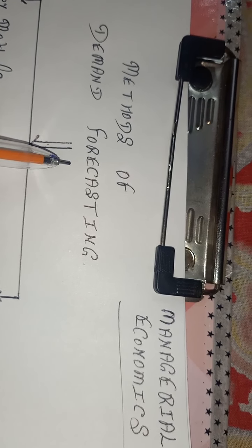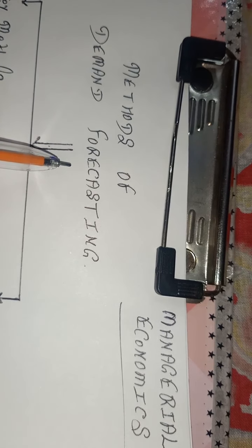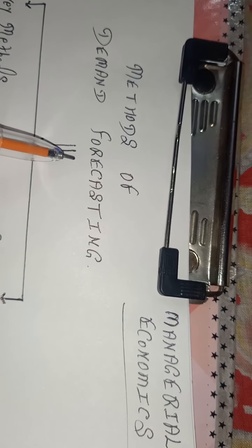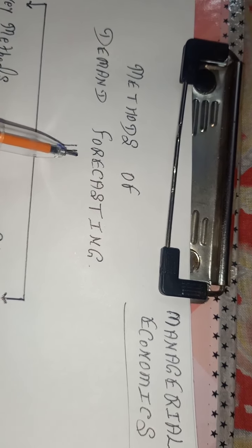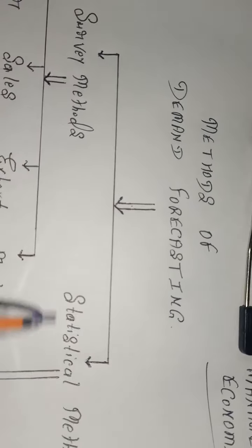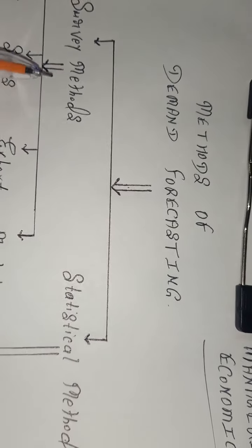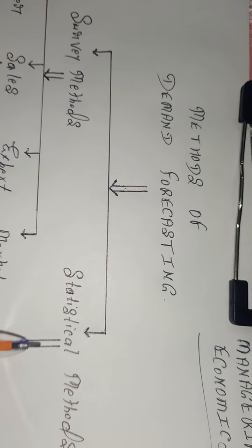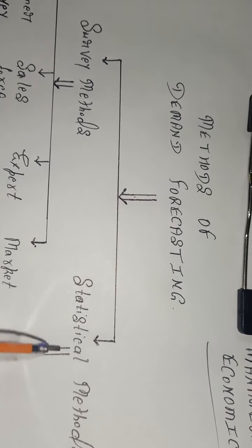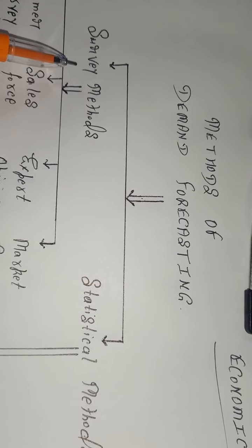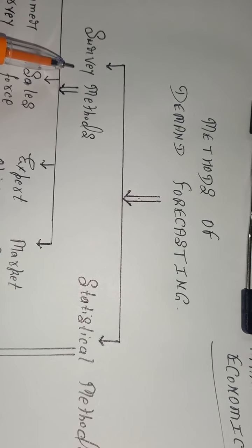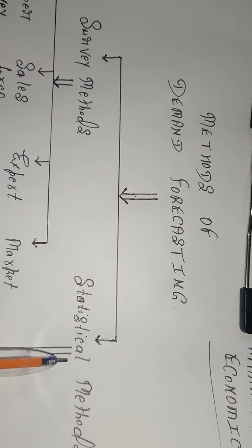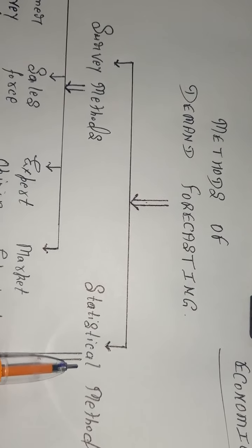Various methods of demand forecasting have been categorized into two broad areas. The first area is survey methods and the second focuses on statistical methods. Survey methods are also known as qualitative methods, and statistical methods are also known as quantitative methods.